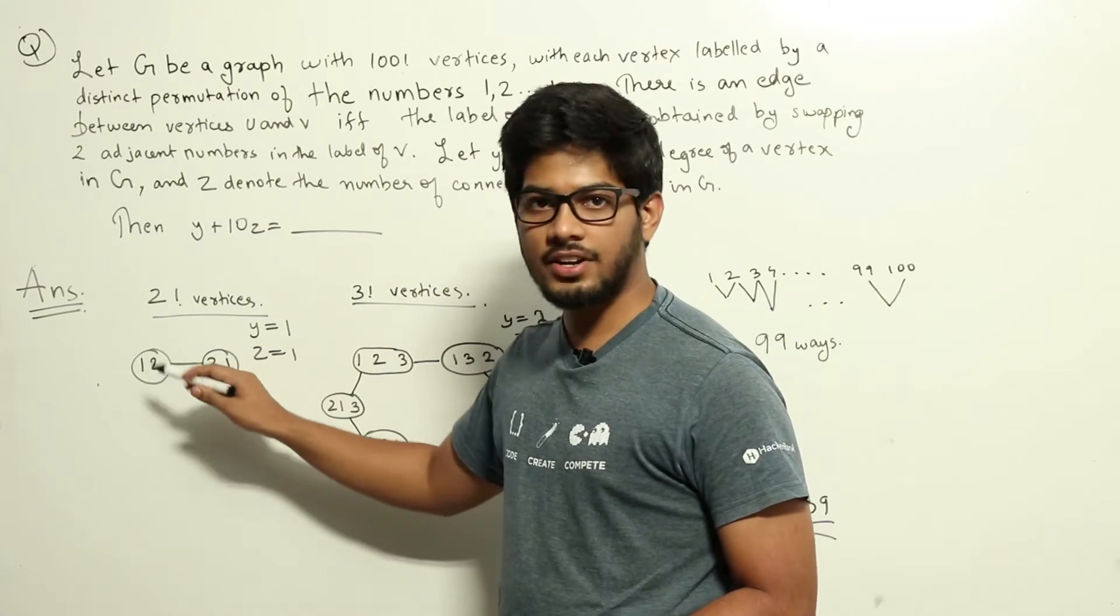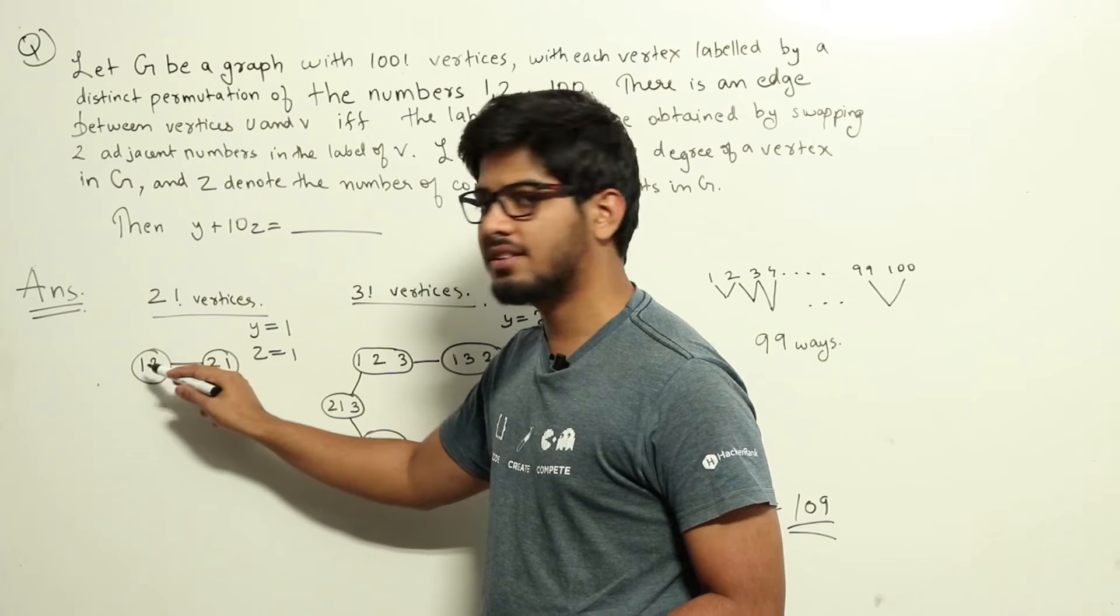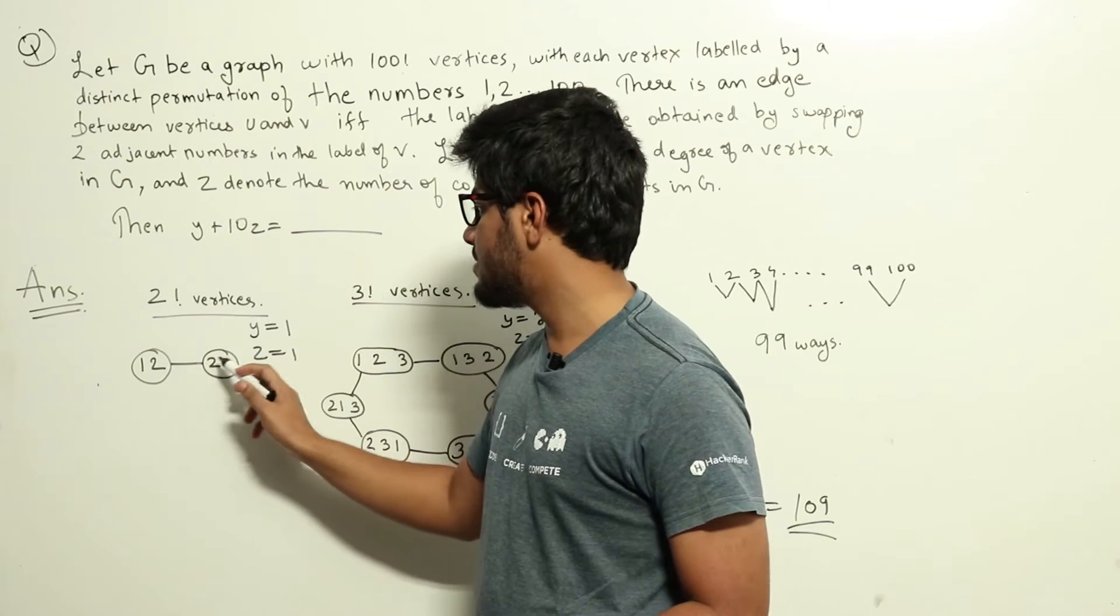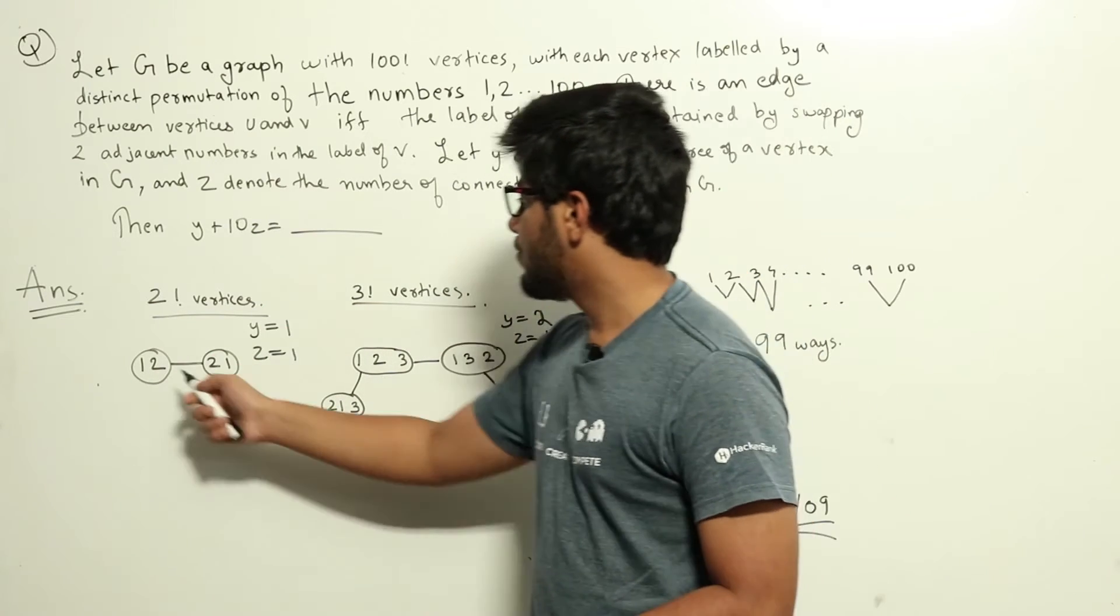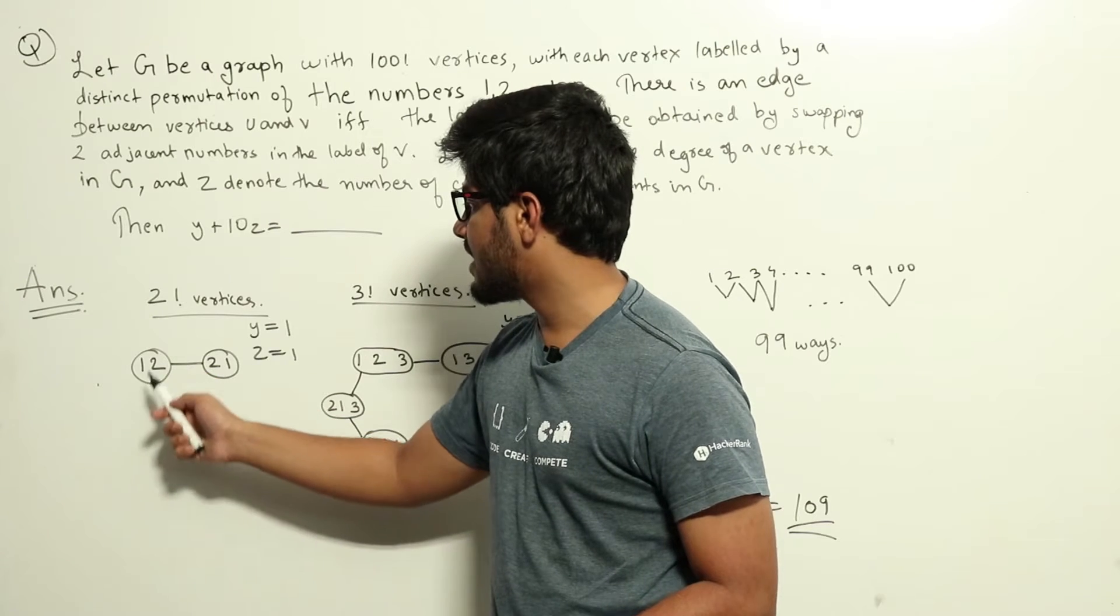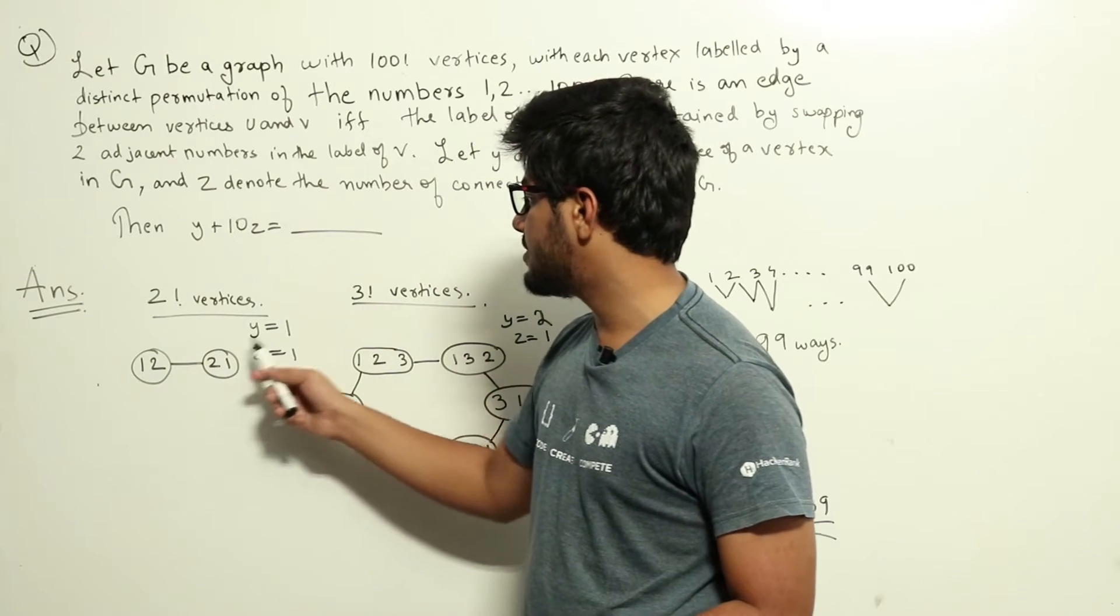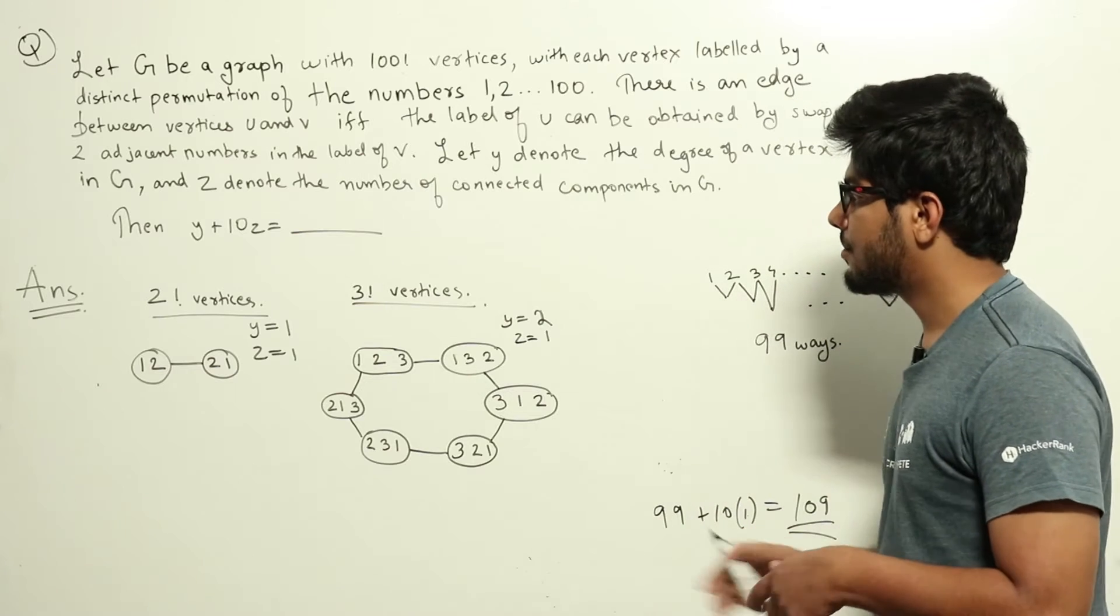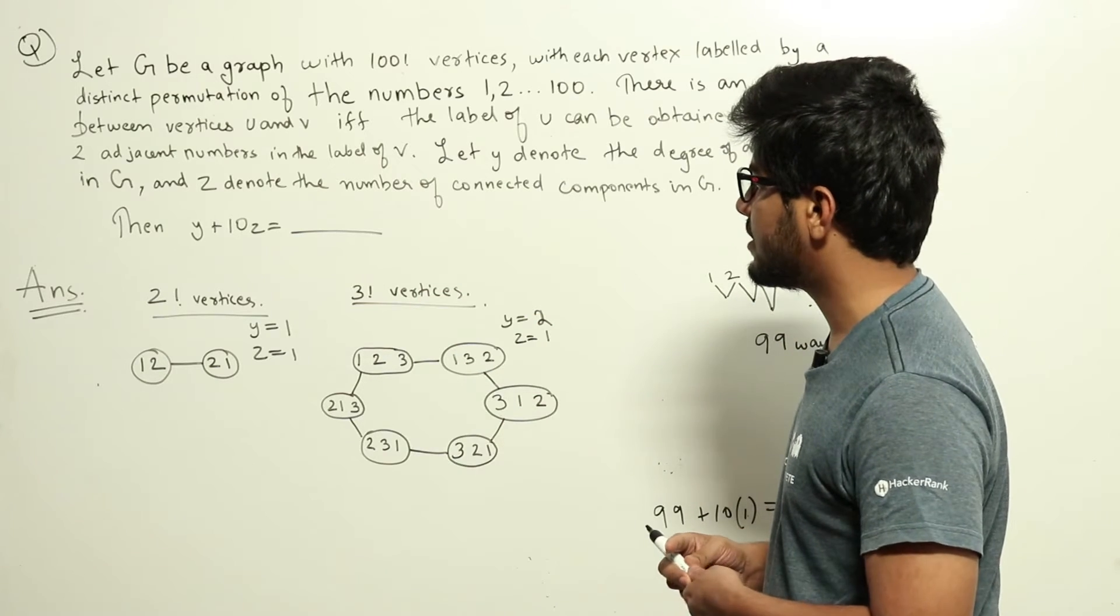So let's take any vertex and if we can swap any two adjacent numbers and get the label of a different vertex there will be an edge between those two vertices. So 1 and 2 there's only one swapping which can be performed that is 2, 1. Obviously that is this vertex. So there will be an edge between these two vertices. So this is the graph with two factorial vertices. The degree of each vertex is 1 here.